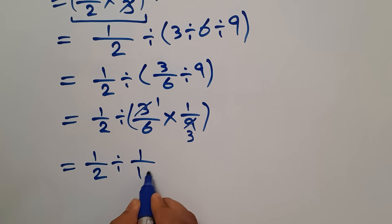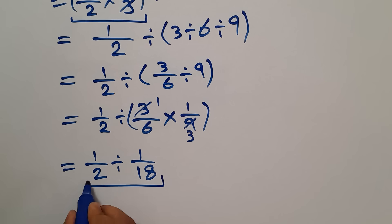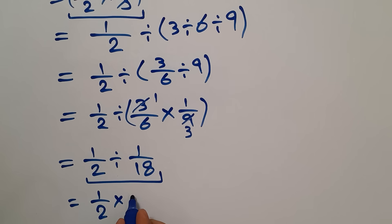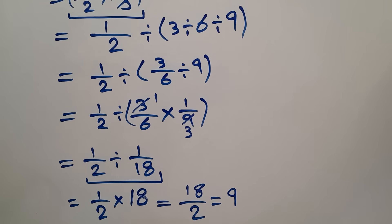So we have 1 over 2 divided by 1 over 18. Again according to the KCF rule, we can write 1 over 2 times 18, which equals 18 divided by 2, which equals 9. So our final answer to this problem is 9.